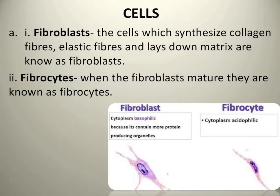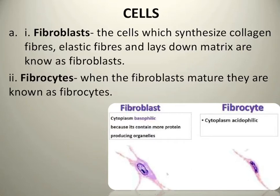This is a type of fibroblast. What is a fibroblast? It is the cell that synthesizes collagen fibers and elastic fibers — that is why it is called a fibroblast. Fibroblast means a type of stem cell from which collagen fibers and elastic fibers are produced. When fibroblasts get mature, they become fibrocytes — so matured fibroblasts are called fibrocytes.